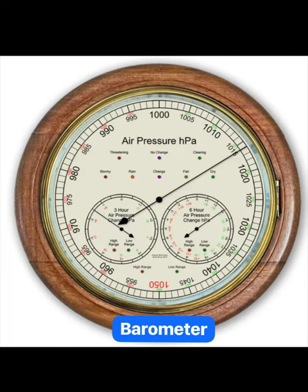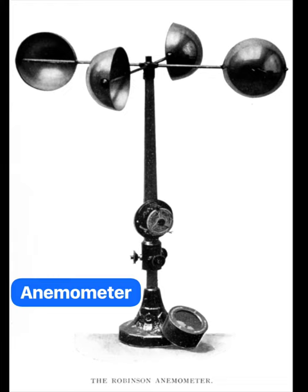Today, air pressure is also measured with an aneroid barometer. A tool called an anemometer measures wind speed. Most anemometers have three or four cups. The faster the cups spin in the wind, the higher the wind speed shown on the anemometer.